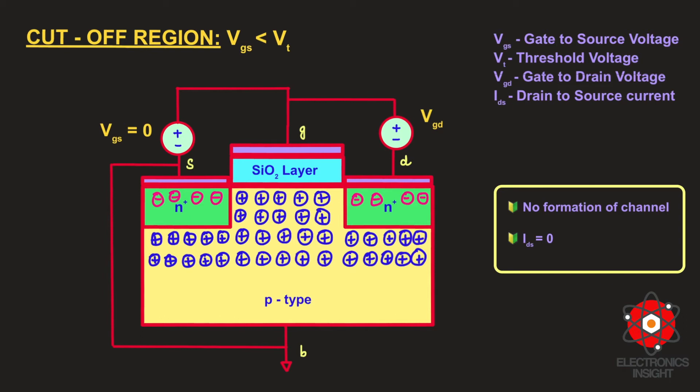This particular region of operation is called the cutoff region, where we operate below the threshold voltage. It is also called the sub-threshold region because the gate voltage is applied lesser than the threshold voltage. Any minimal leakage current due to a faulty transistor is referred to as sub-threshold leakage current, which is essentially zero in this case.